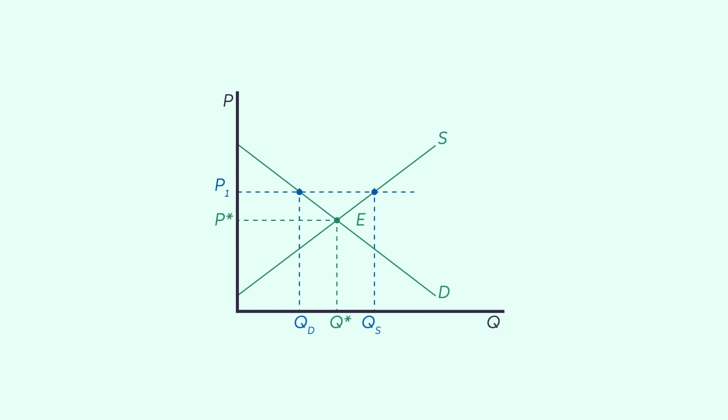Thus, the price continues to fall until the quantity demanded is equal to the quantity supplied at equilibrium point E.